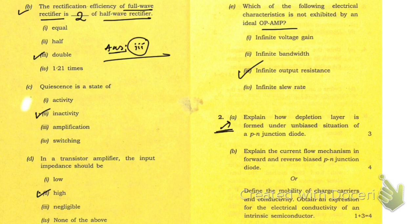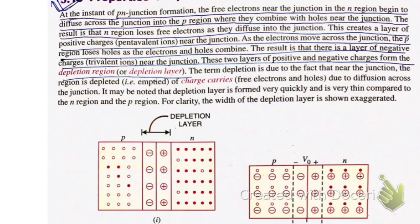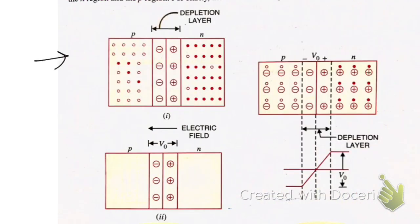Question 2a: Explain how depletion layer is formed under the unbiased situation of a pn junction. Here is the answer to question number 2a. Here is the explanation. Let me show you the diagram on the other side on a new slide. Here you can see the diagram.